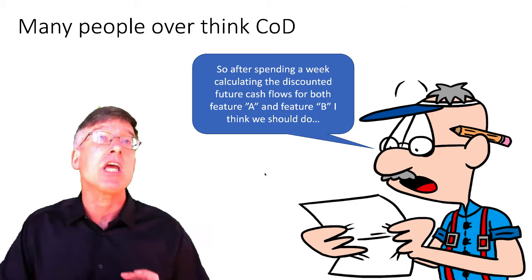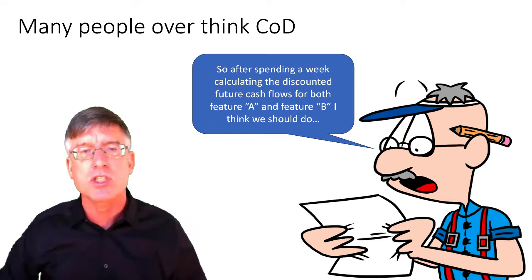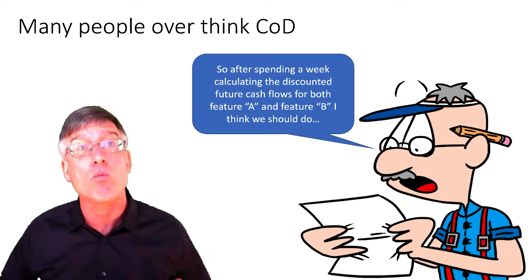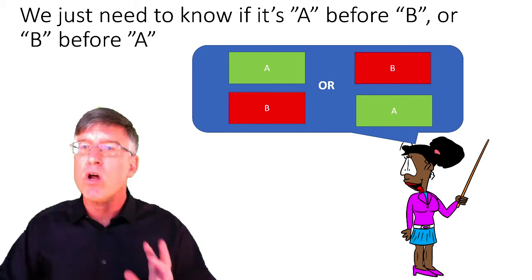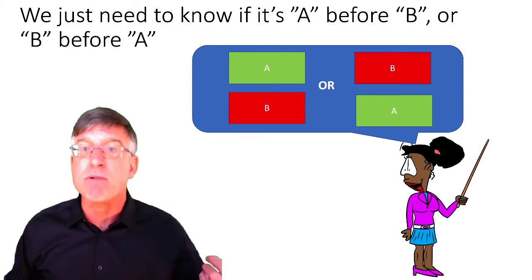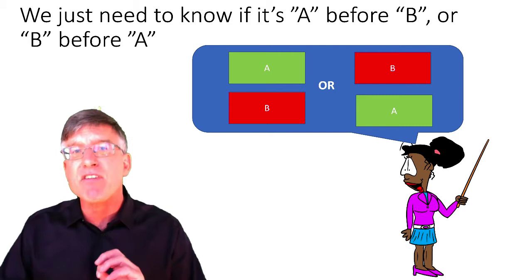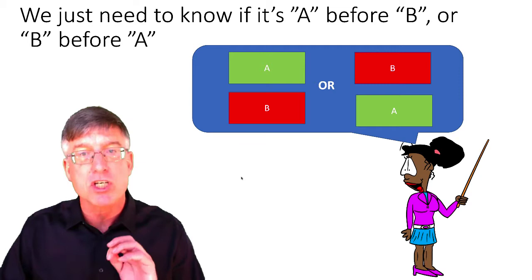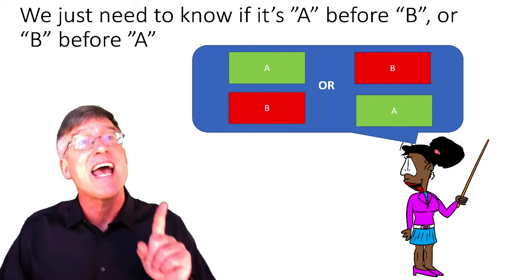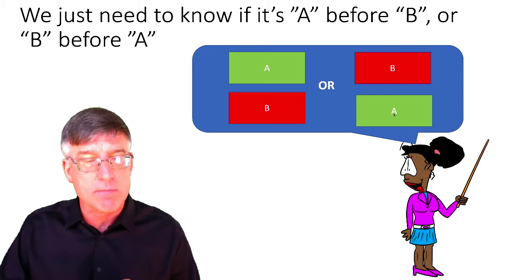So here's the thing about cost of delay and Weighted Shortest Job First: everybody overthinks it. People think they have to somehow reduce cost of delay down into future cash flows and comparisons. That's not what you have to do. Think about what we're using it for — we just want to answer this question: should we do A before B, or B before A? That is all we need to use it for. We don't have to have a precise calculation or a precise number; we just have to have a defensible economic argument.